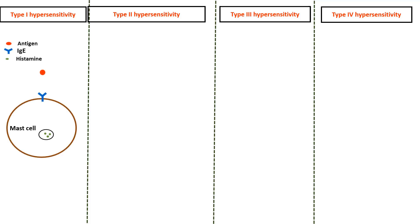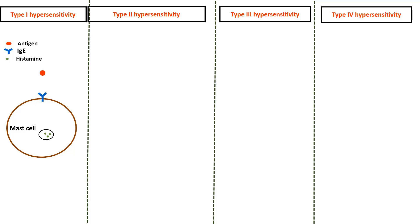In type 1, the antigen, which is usually an external allergen such as pollen or certain food molecules, binds to IgE antibodies attached to the surface of mast cells or basophils.